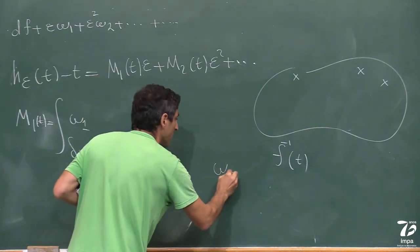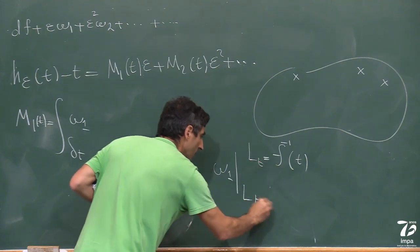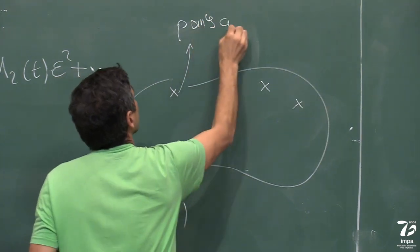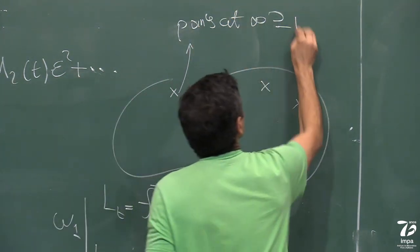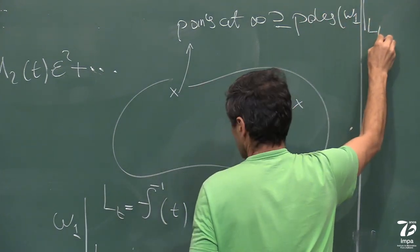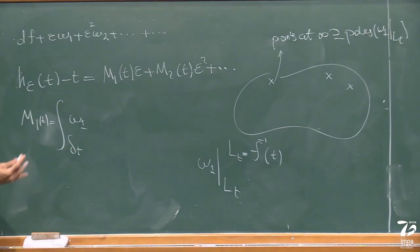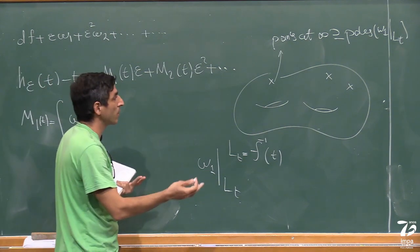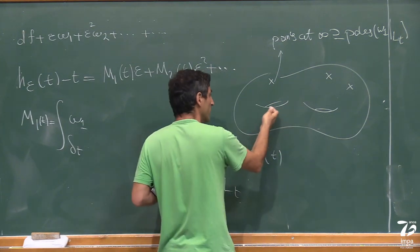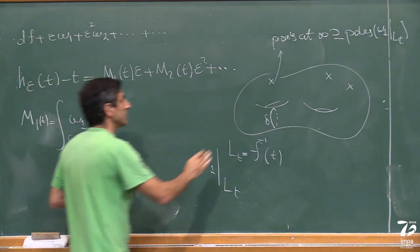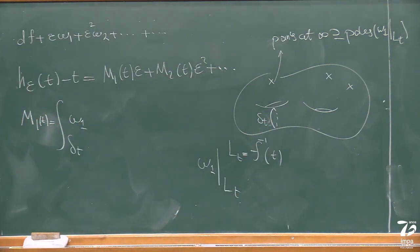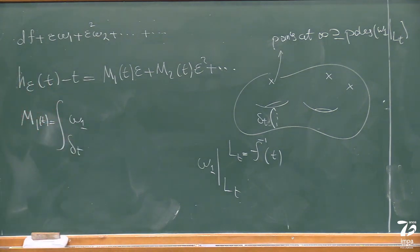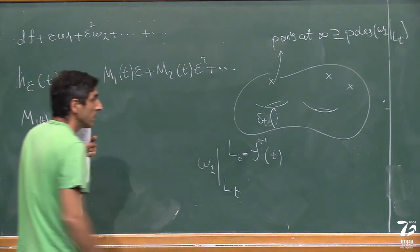If you restrict omega_1 over L_t, there will be a holomorphic differential form with poles at the points at infinity. The poles of omega_1 restricted to L_t are there because omega is polynomial in C²; if it has poles, they must be at infinity. Abel was the first person who worked on elliptic integrals, where this picture becomes elliptic with just one hole, and he studied integration of differential forms over delta_t — differential forms of the first kind, second kind, third kind. We call them Abelian integrals.